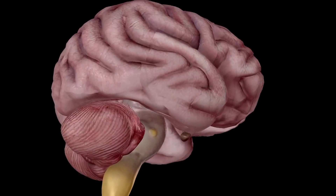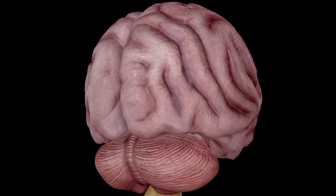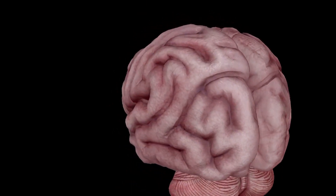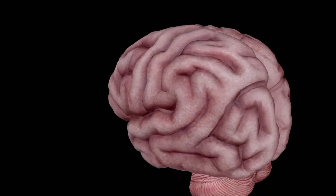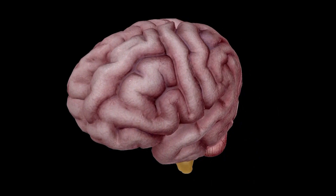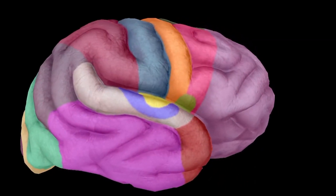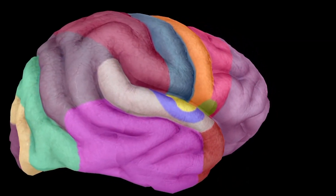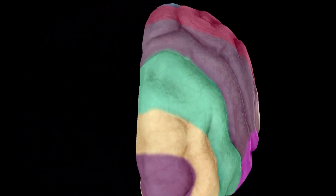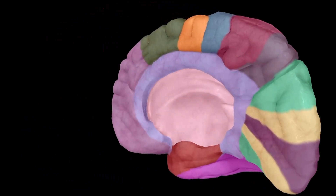The brain is the most complex organ in your body. It's your command center, exerting control over autonomic functions like breathing, the beating of your heart, muscle activity, and hormone release, while also giving you the ability to think and see and hear and interpret the world around you in a way that is completely unique to everyone else.